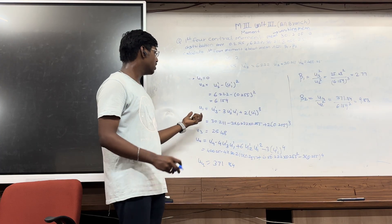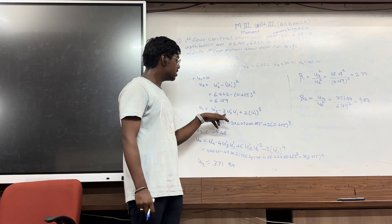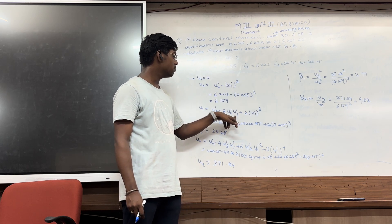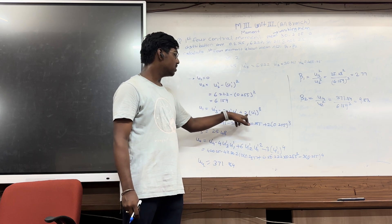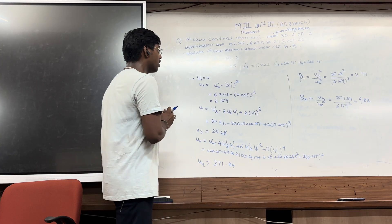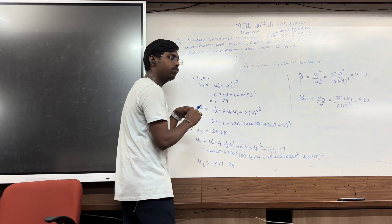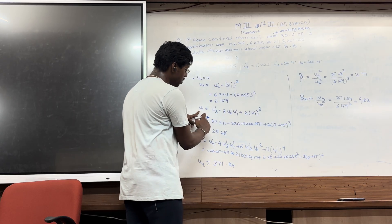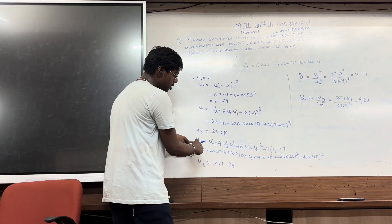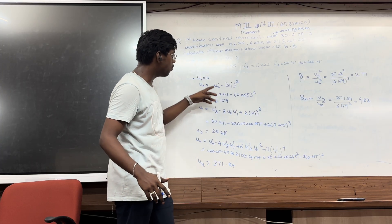For the determination of mu3, the formula is mu3 dash minus 3 into mu2 dash into mu1 dash plus 2 into mu1 dash bracket cube. For mu2, the first will be mu2 dash. For mu3, first is mu3 dash. For determine mu4, first will be mu4.